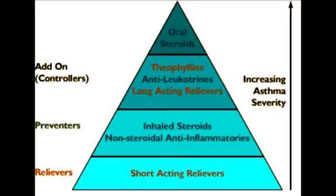Describe the goal of asthma drugs. The reason asthma occurs is due to bronchoconstriction. Basically, something causes the bronchioles to constrict and therefore air is not able to get inside the lung, which leads to asthma. Now, thinking about the goal of asthma drugs, you have to remember the things that cause bronchoconstriction.